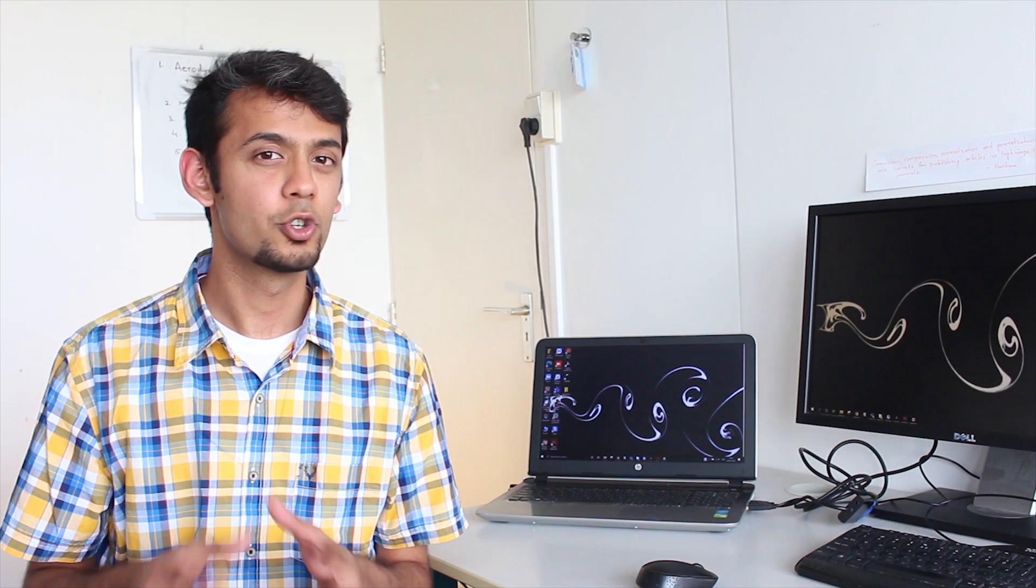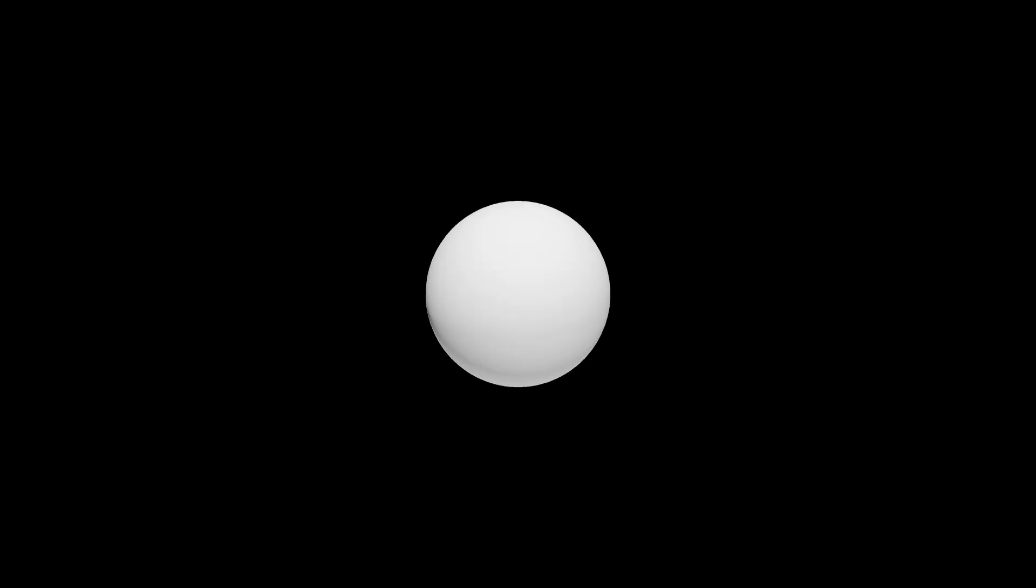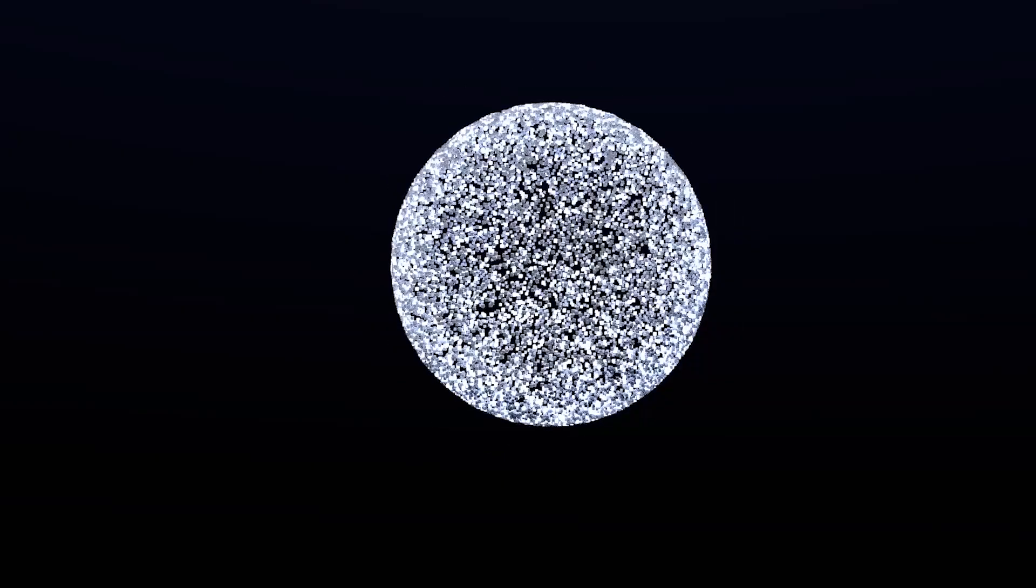For the cloud droplets to become big enough to fall, pure condensation can't do the trick. Simple calculations show that pure condensation is far too slow for the droplets to become bigger. From a volumetric view, it takes around 1 million cloud droplets of 10 µm radius to combine together to make one single raindrop. This would take ages if it were done naturally.